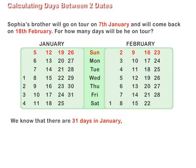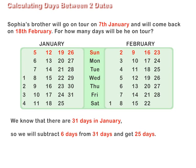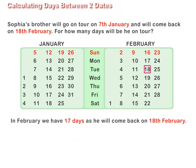We know that there are 31 days in January. So we will subtract 6 days from 31 days and get 25 days. In February, we have 17 days, as he will come back on 18th February.